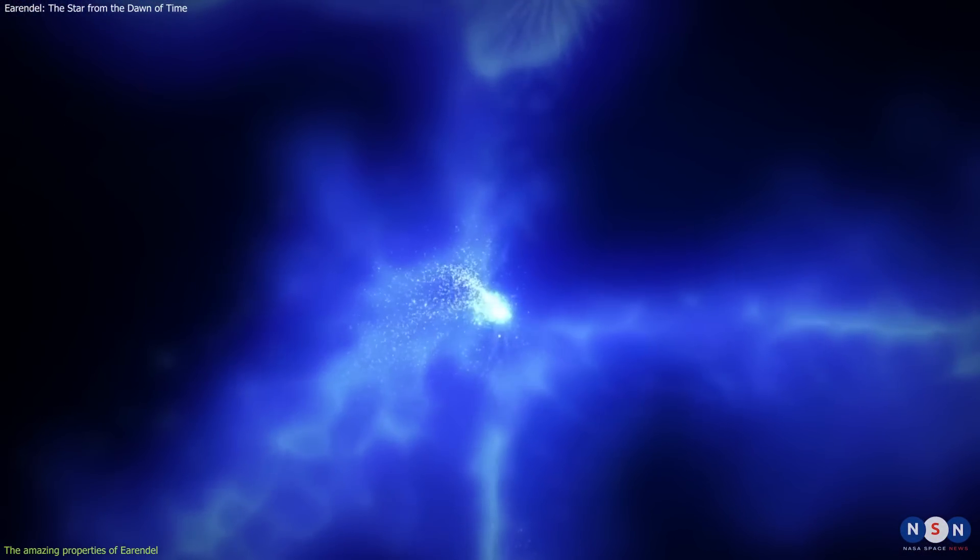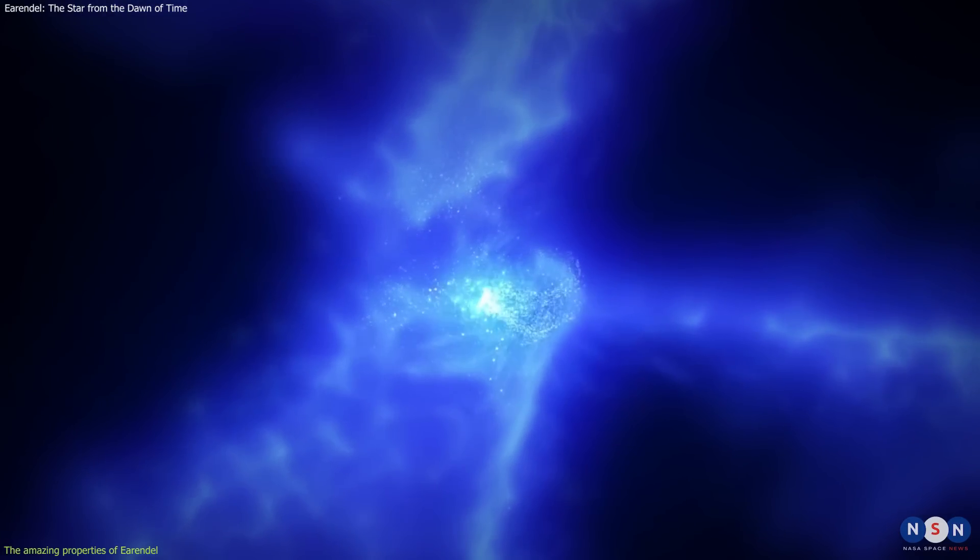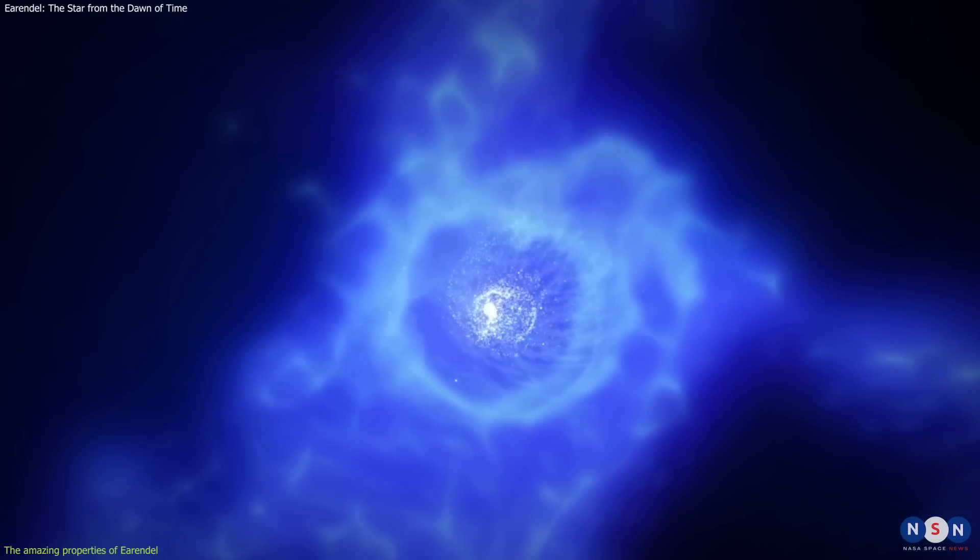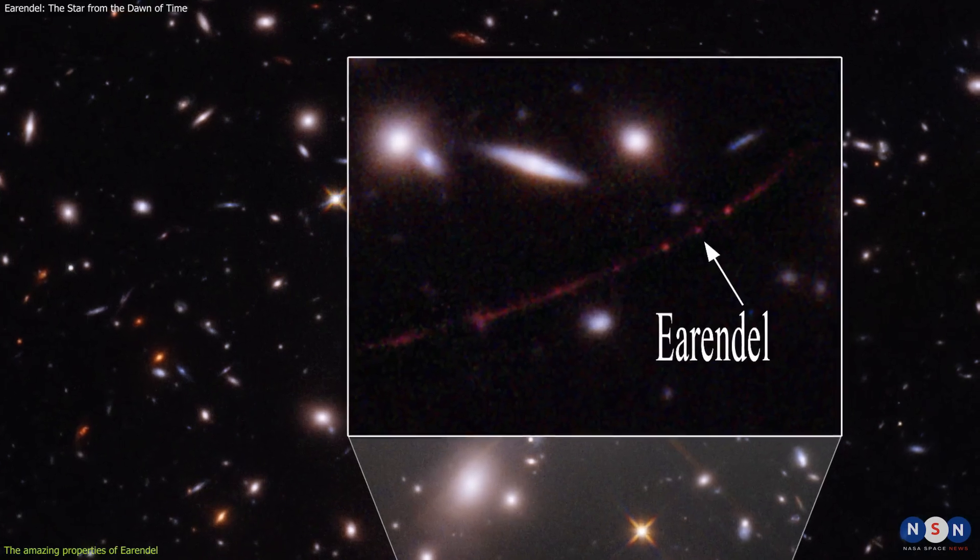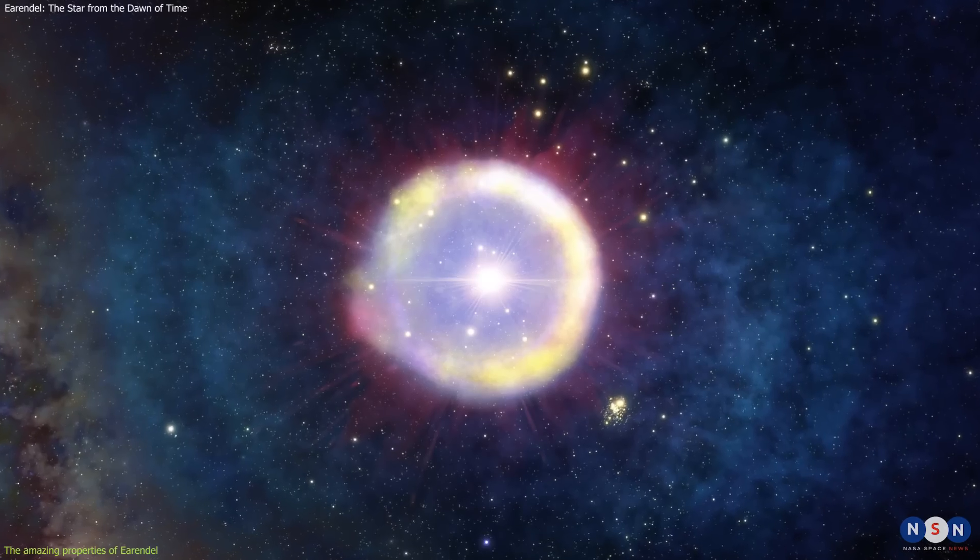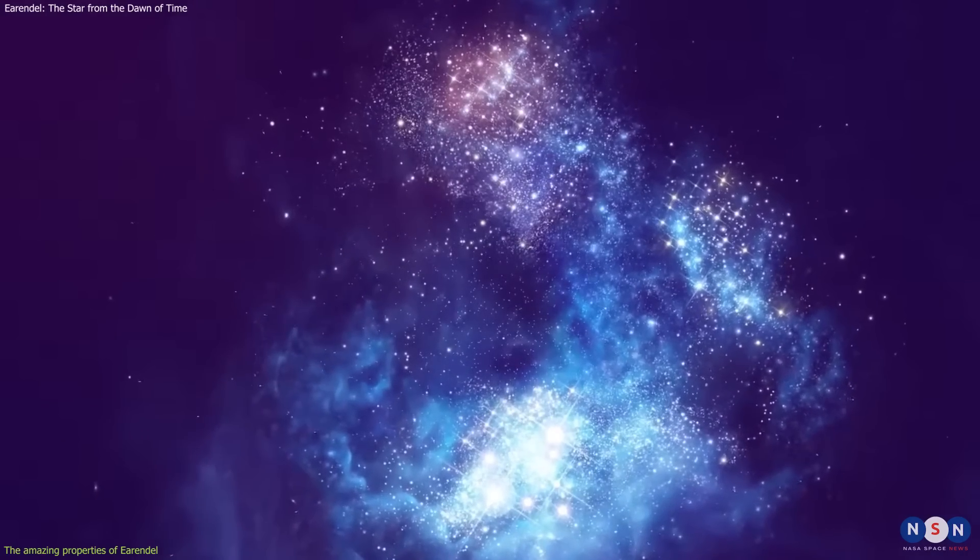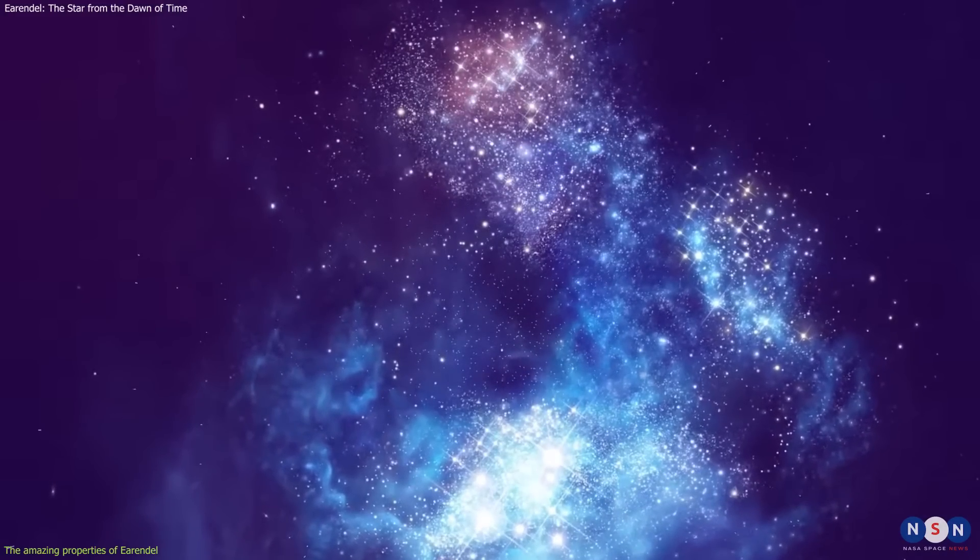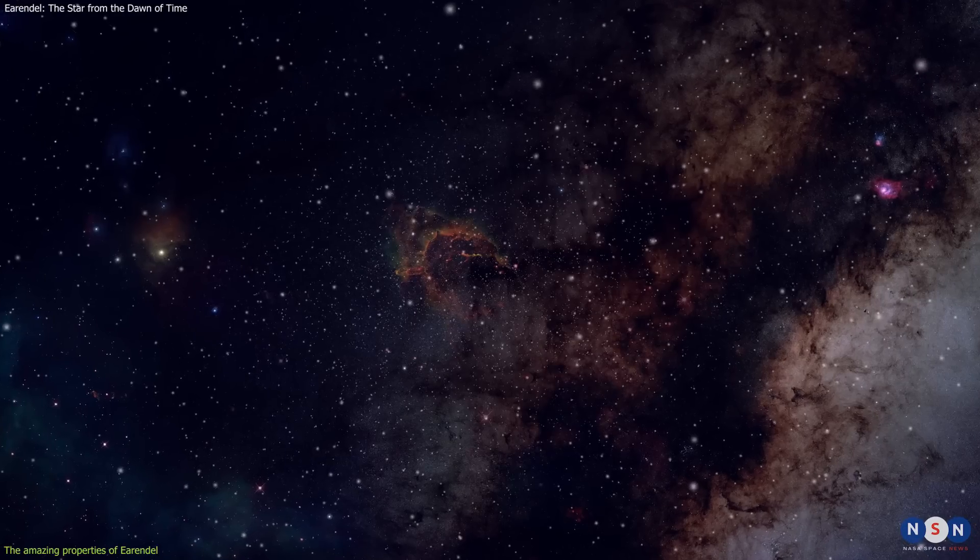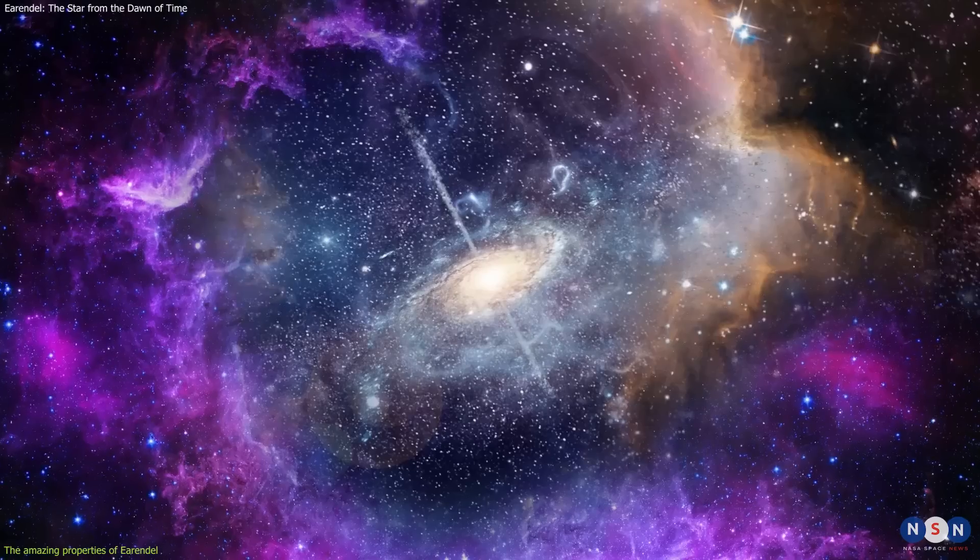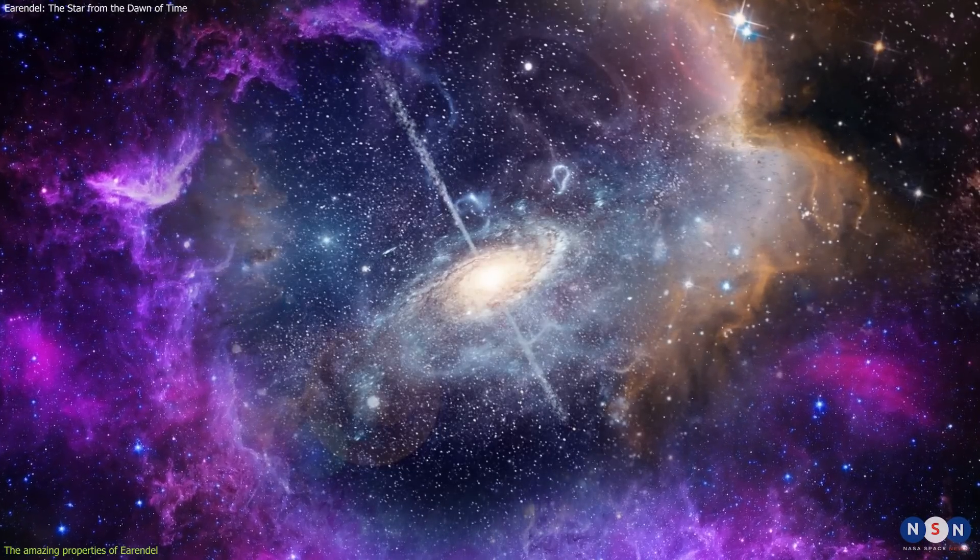This means that this star is a very primitive star that formed from the pristine gas that existed in the early universe, before any metals were created. This star is a rare example of a metal-poor star, which are also called Population III stars. These stars are thought to be the first generation of stars that ever formed in the universe, and they may have played a crucial role in transforming the dark and cold cosmos into a bright and warm place full of galaxies and planets.